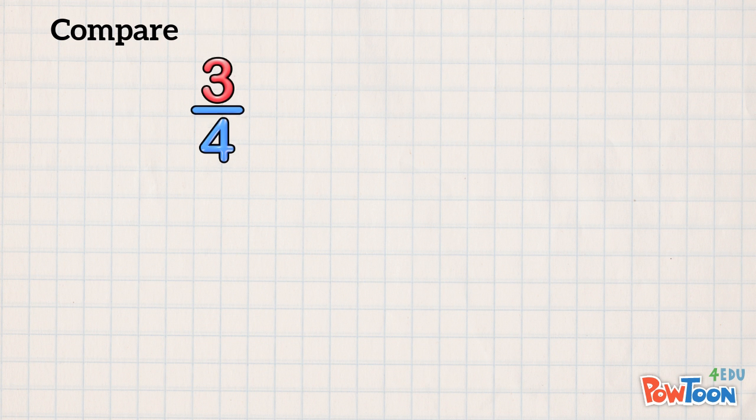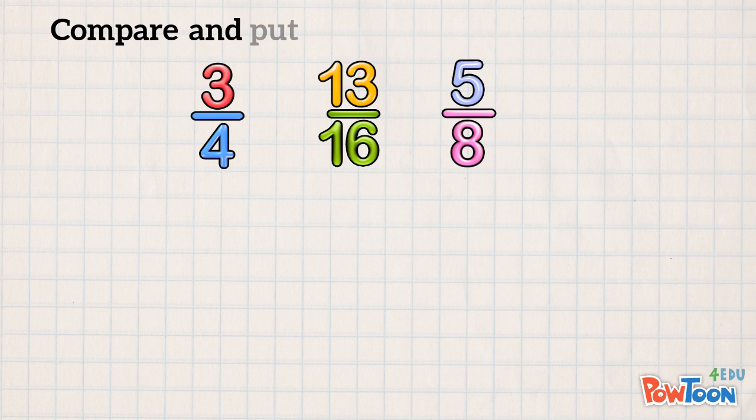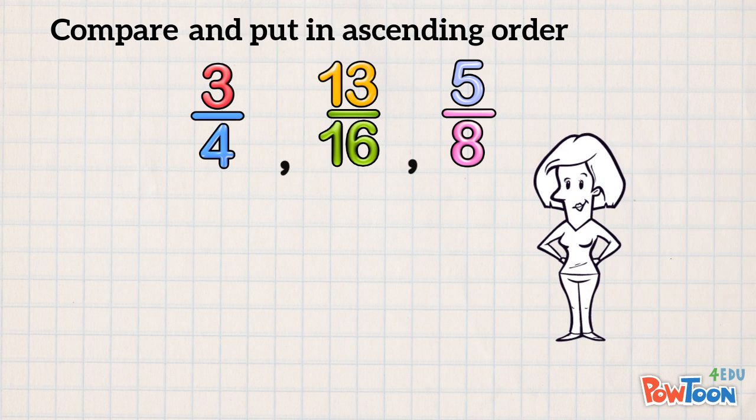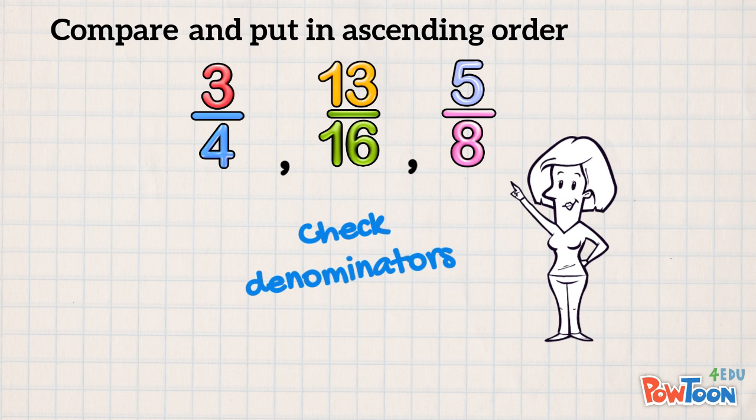We have to compare 3 quarters, 13 sixteenths, and 5 eighths and put them in ascending order! The first thing we always do when we compare fractions is check the denominators!